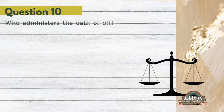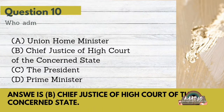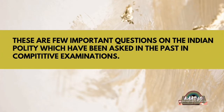The last question for today: Who administers the Oath of Office to the Governor? A. Union Home Minister, B. Chief Justice of the High Court of the concerned state, C. The President, D. Prime Minister. The correct answer is B. Chief Justice of the High Court of the concerned state. These are the few important questions for today. We will deal with other such questions in the upcoming days. To know more about such important questions, subscribe to our channel.